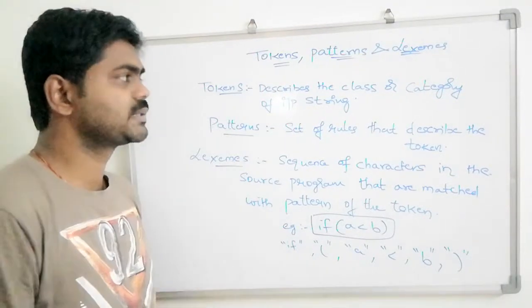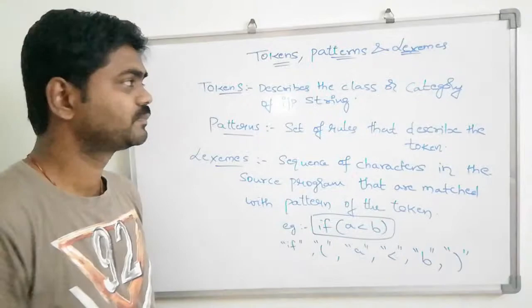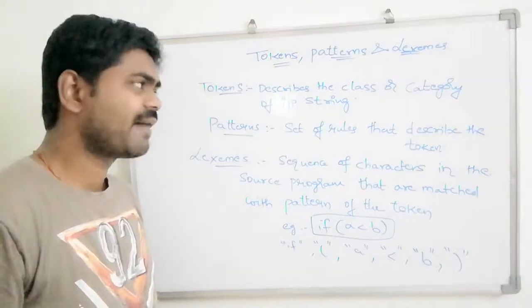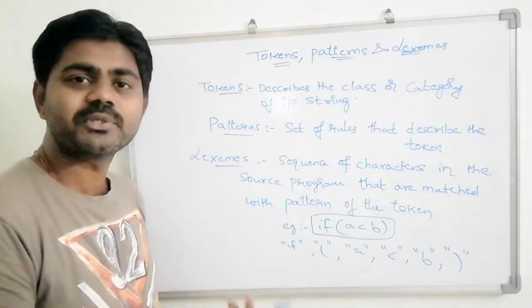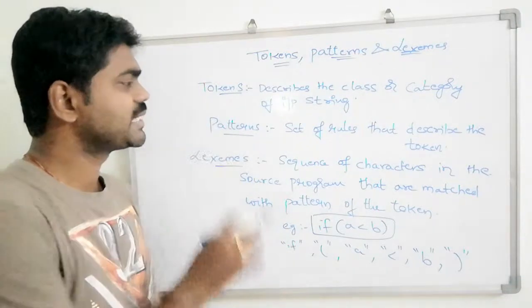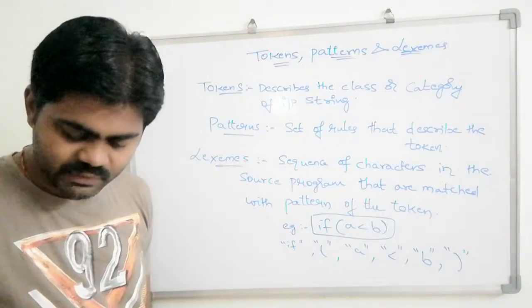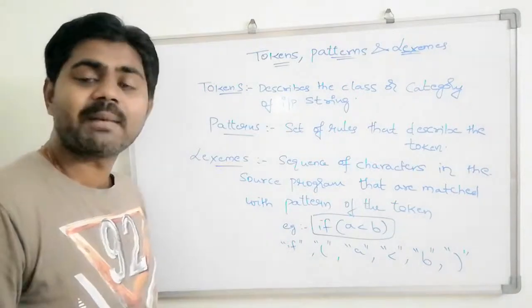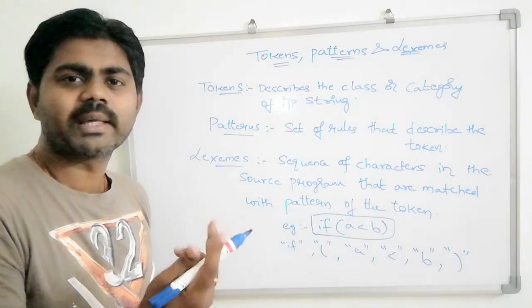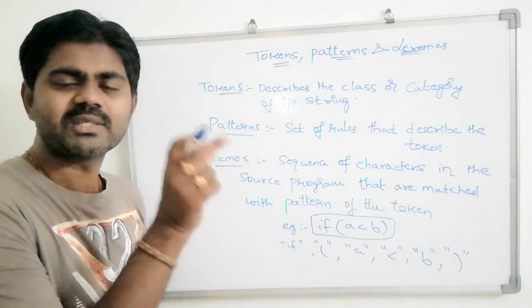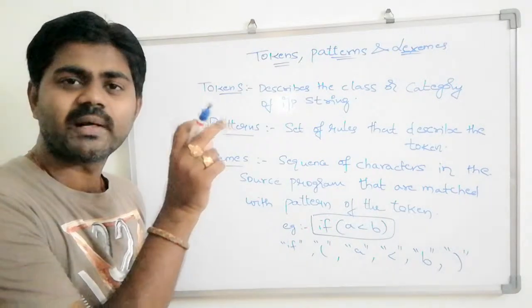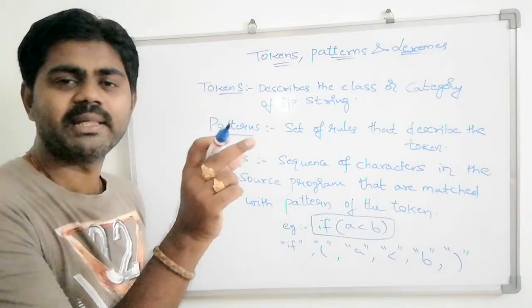Coming to the first one, tokens. What is the token here? It describes the class or category of an input string. For example, if I say int a, comma b, comma c, int is a category. What is the token for int? What is the token for a? What is the token for b?